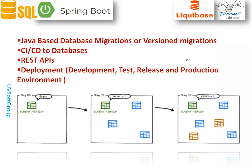I'm going to make a dummy example application with Spring Boot, using Spring Boot JPA and exposing some REST APIs. Then continuously with this API, I'll try to deploy to different environments like development, test, release, and production. The main idea is to share with you how you can build and configure the application and automatically deploy it across different environments. We're talking about Java-based database migrations and versioning migration systems with both Flyway and Liquibase.